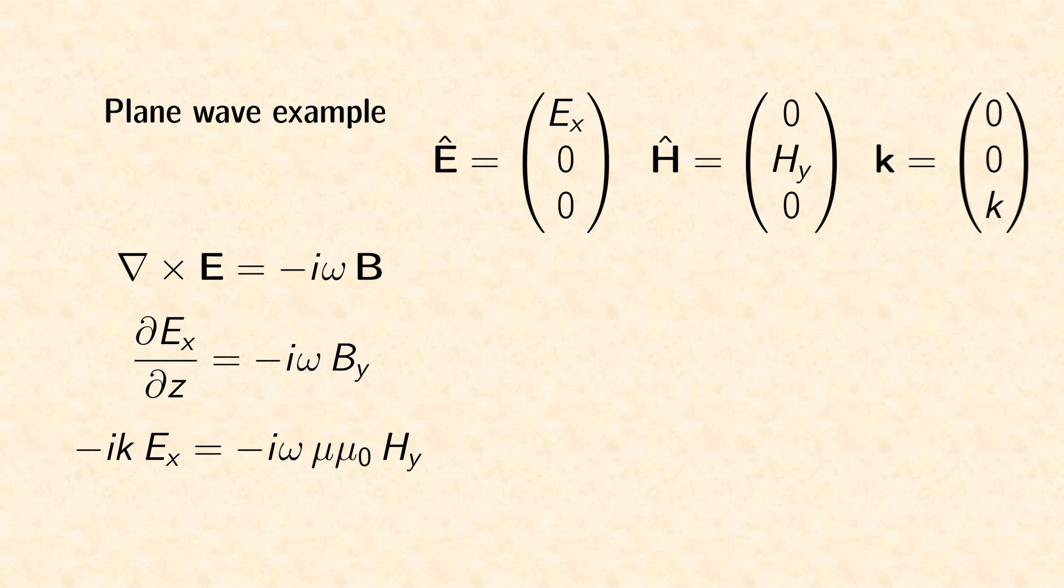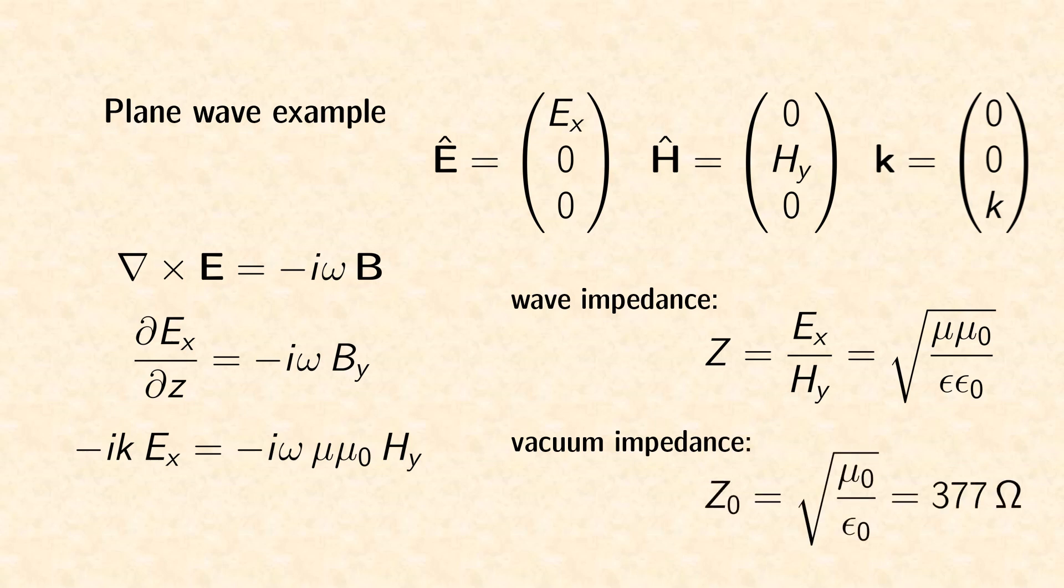The quotient of electric and magnetic field is a constant, which is called wave impedance. In vacuum this value is 377 ohms.